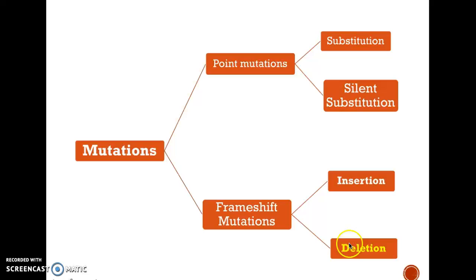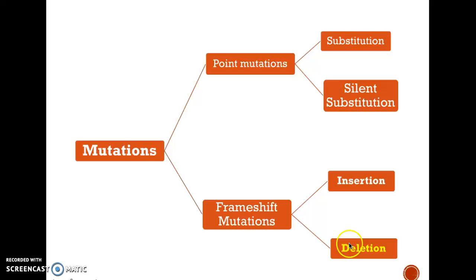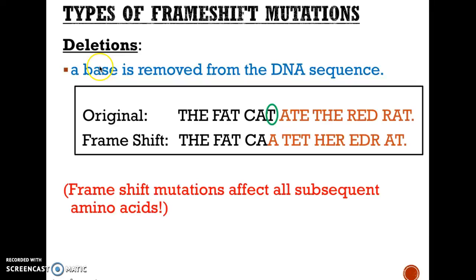Deletion is when we delete or remove a base. Using the same sentence — 'the fat cat ate the red rat' — if we remove that T, everything shifts one letter to the left. You start the sentence as 'the fat cat' but without that T, everything from there on is not going to make any sense anymore. Every single codon or word is not going to pair for the proper amino acid anymore.